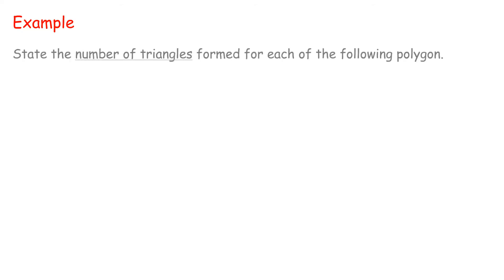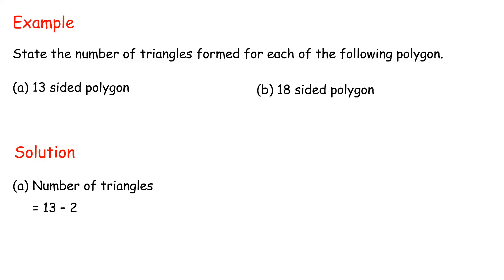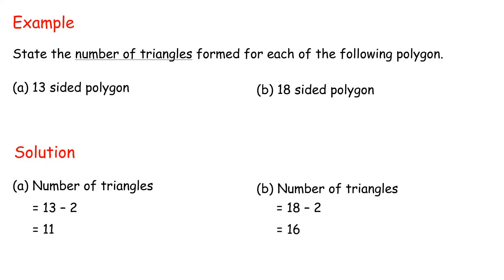Example: State the number of triangles formed for each of the following polygons. Solution: A. A 13-sided polygon — number of triangles equals 13 minus 2, equals 11. B. An 18-sided polygon — number of triangles equals 18 minus 2, equals 16.